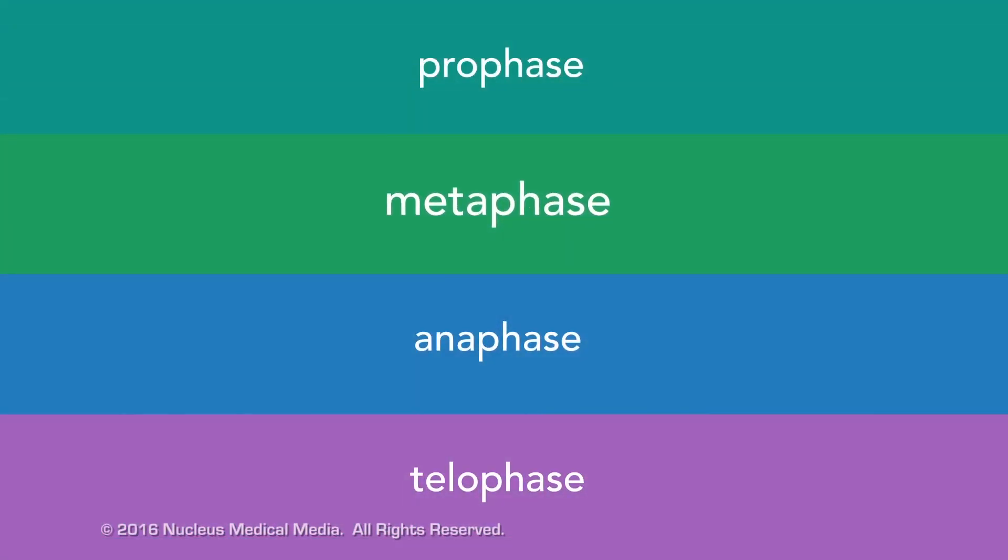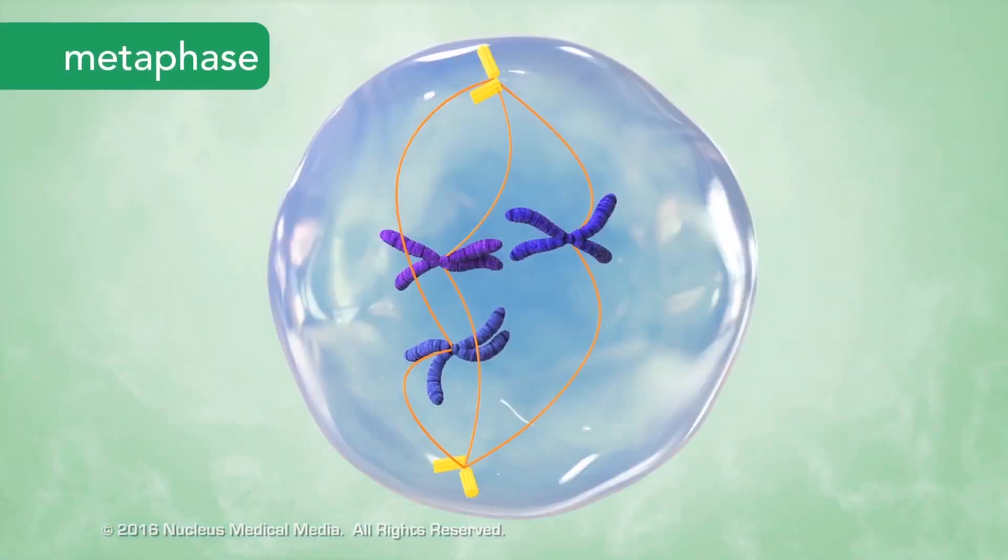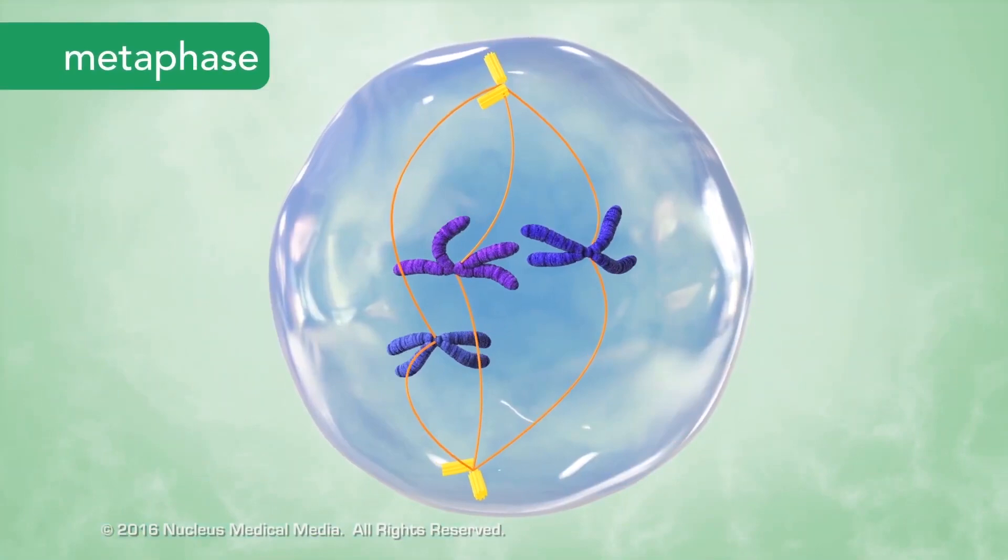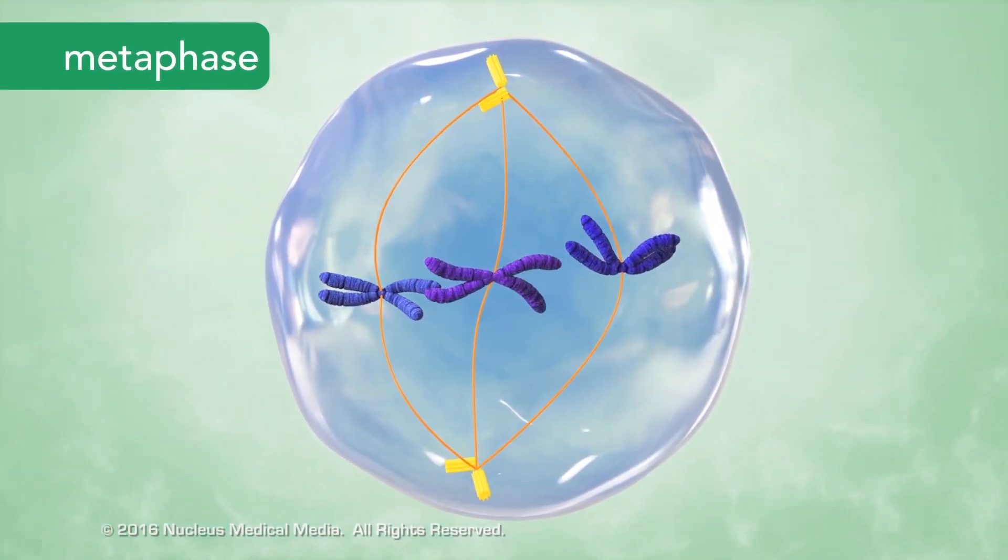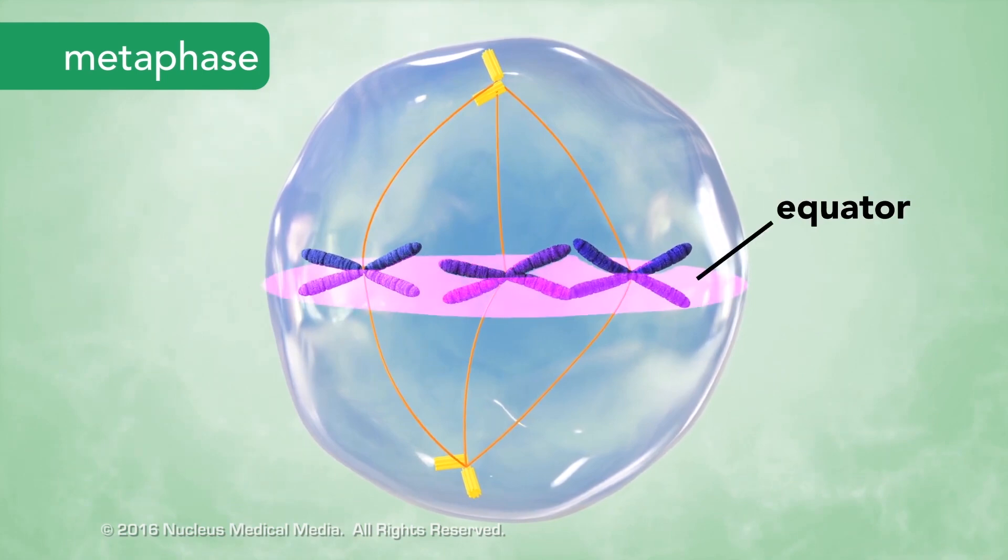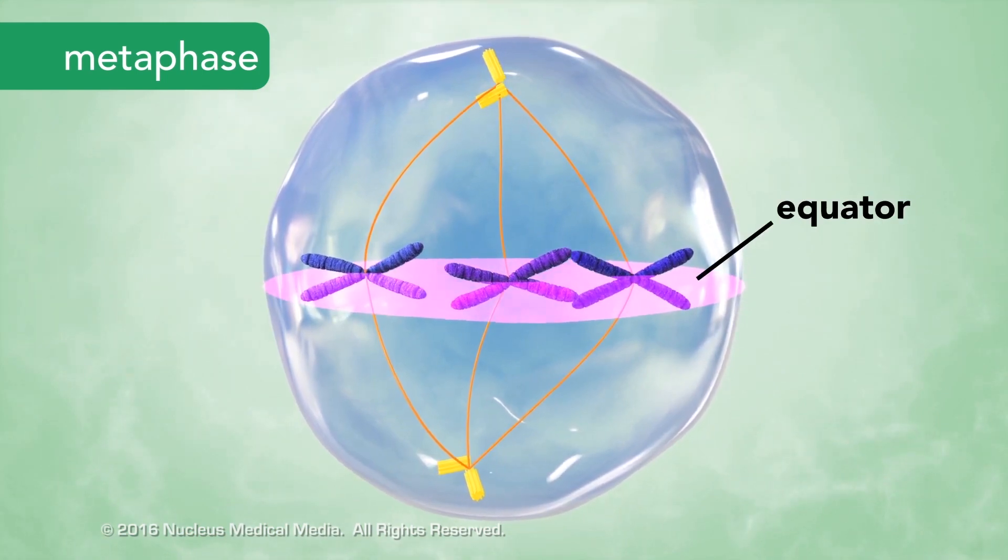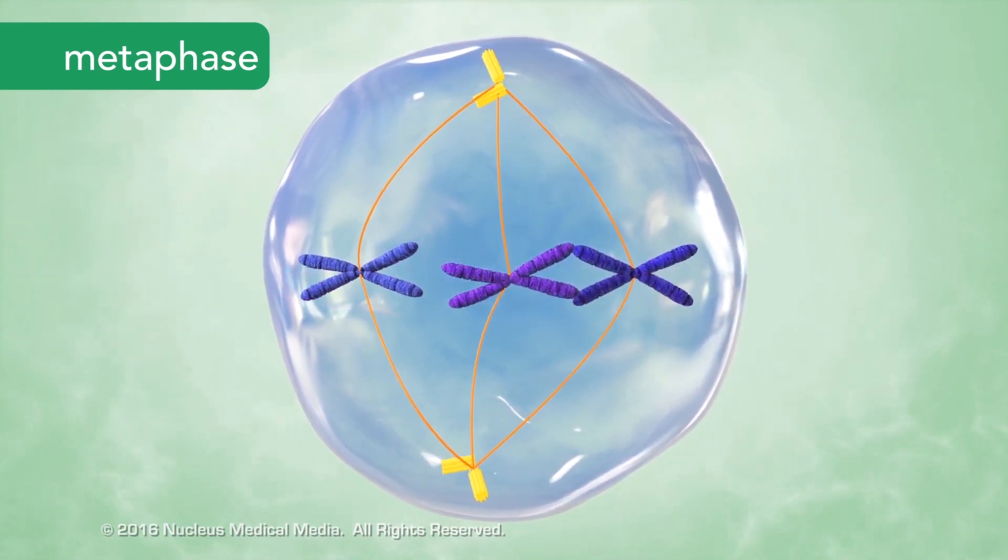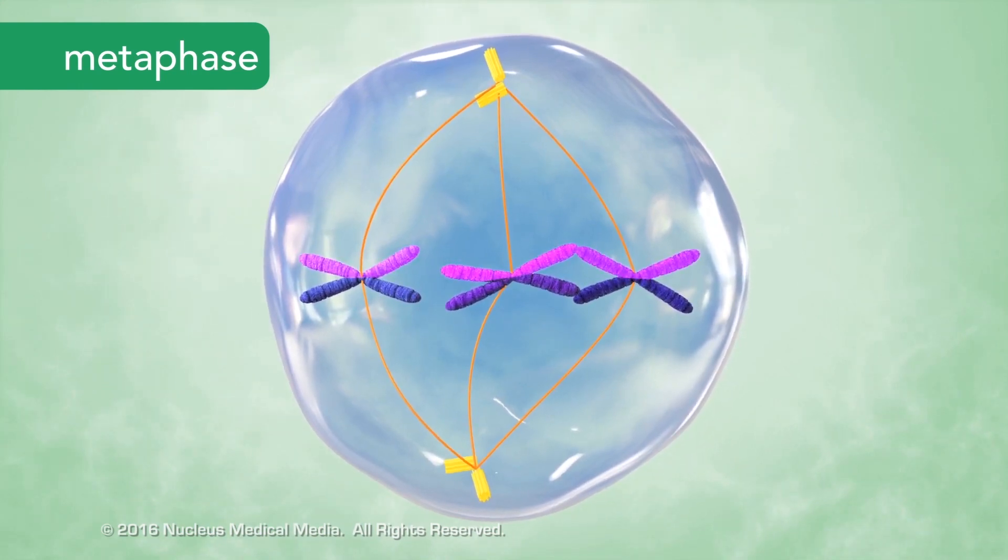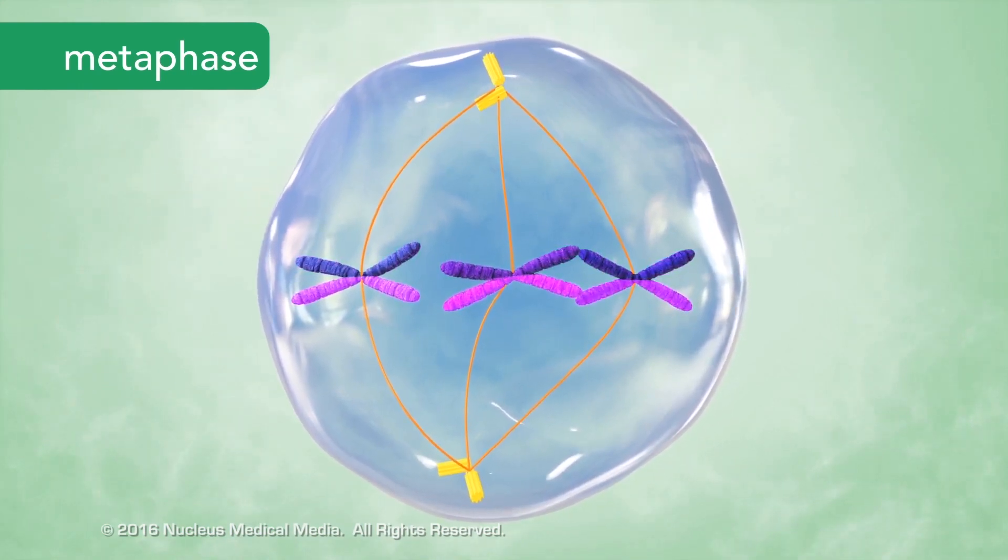Next, the cell enters metaphase. The centrioles complete their movement to the poles of the cell, while the spindle fibers line up the chromosomes along the equator of the cell. The end-to-end alignment of chromosomes results in a sister chromatid on either side of the equator.